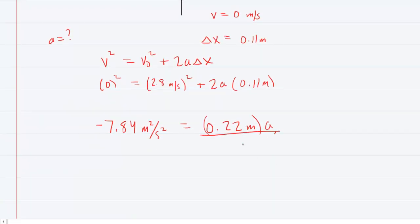We'll finish off solving for acceleration by dividing both sides by 0.22 meters, and when we do so, we'll cancel out on the right-hand side. We have an acceleration now of negative 35.6, and this will come out in meters per second squared.